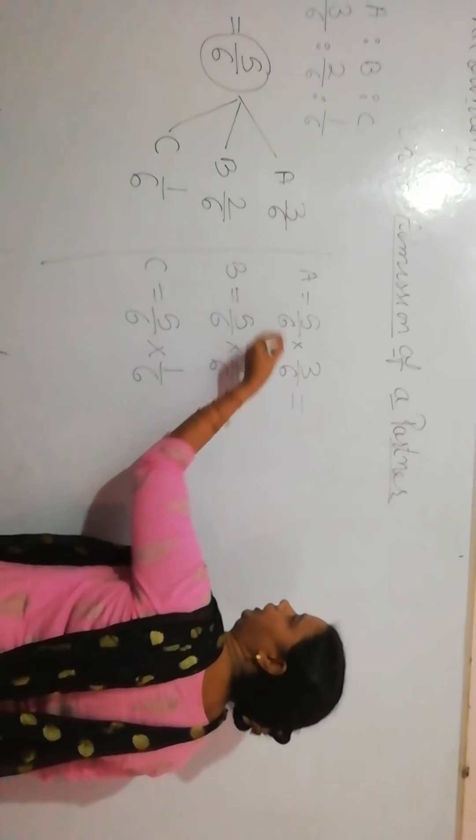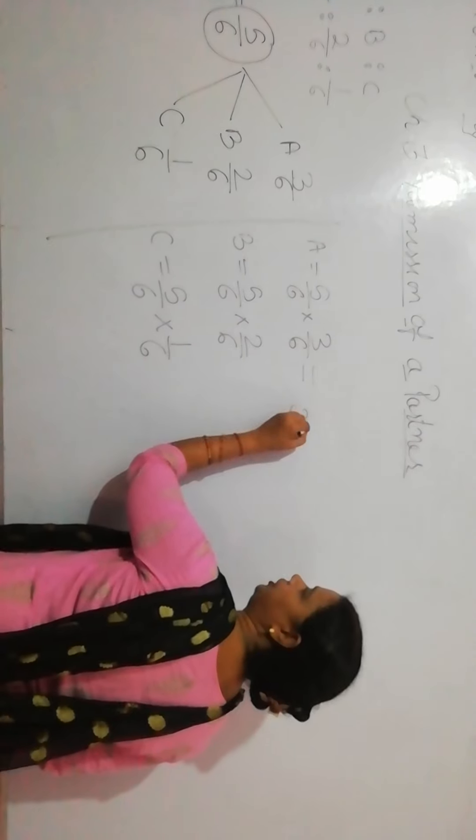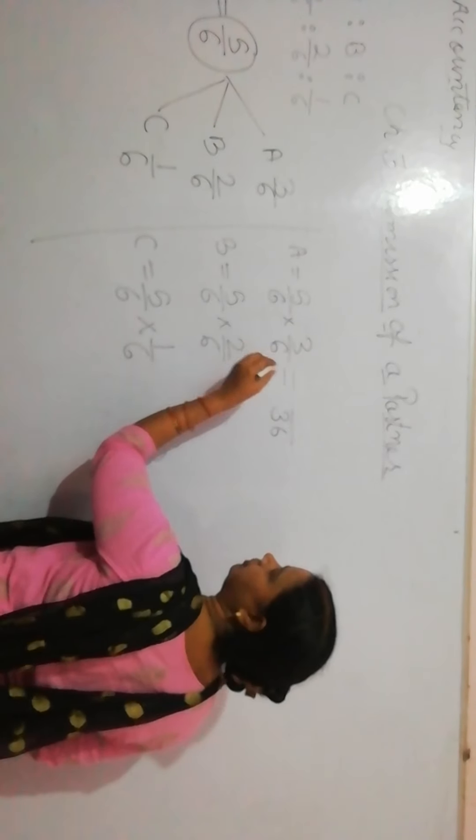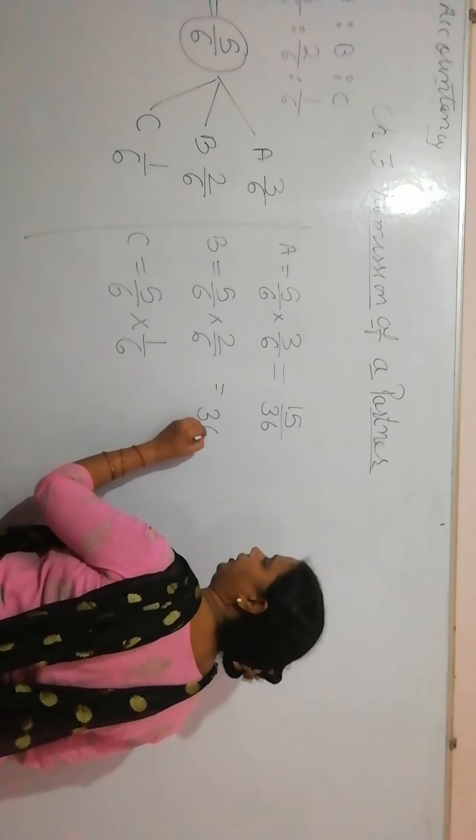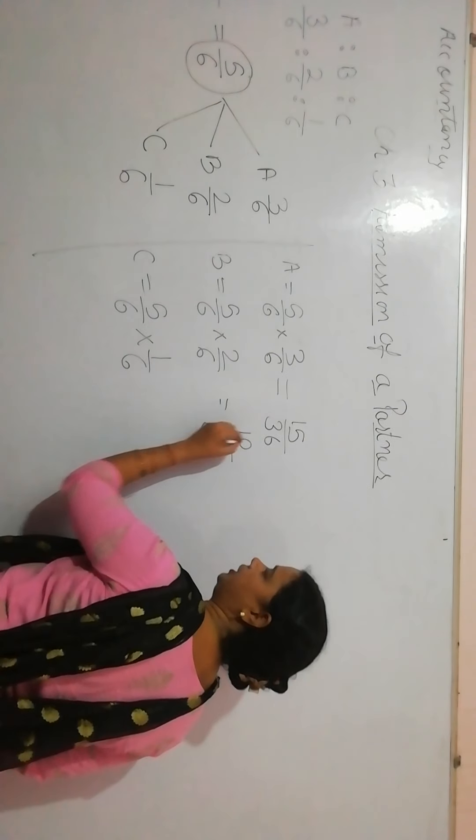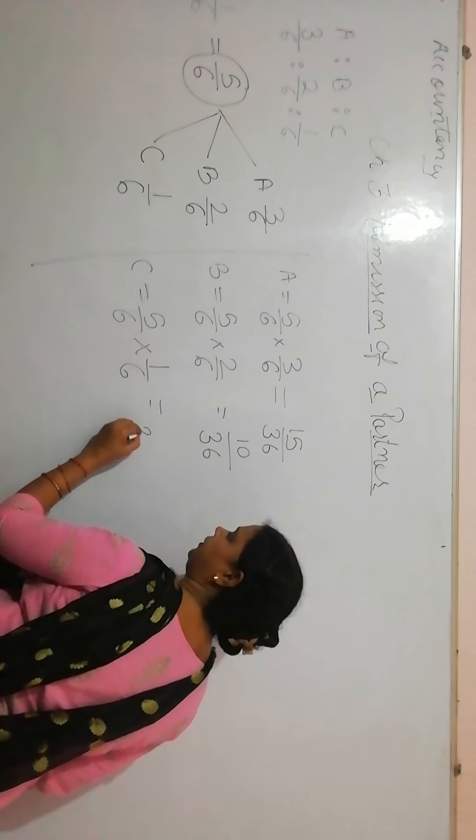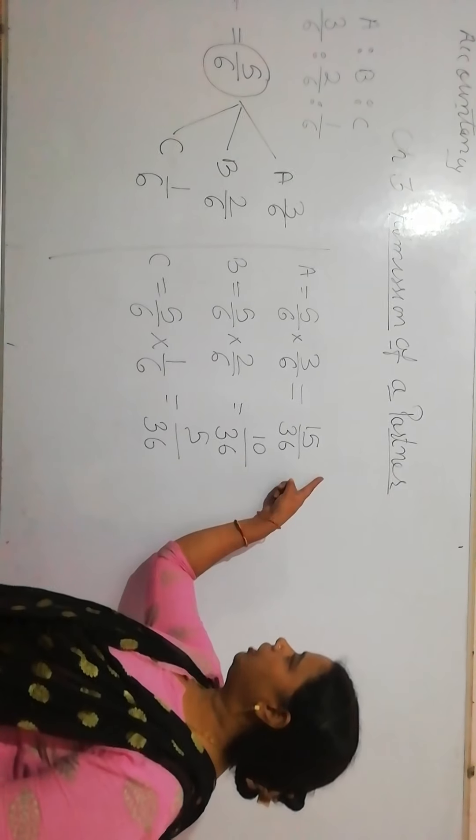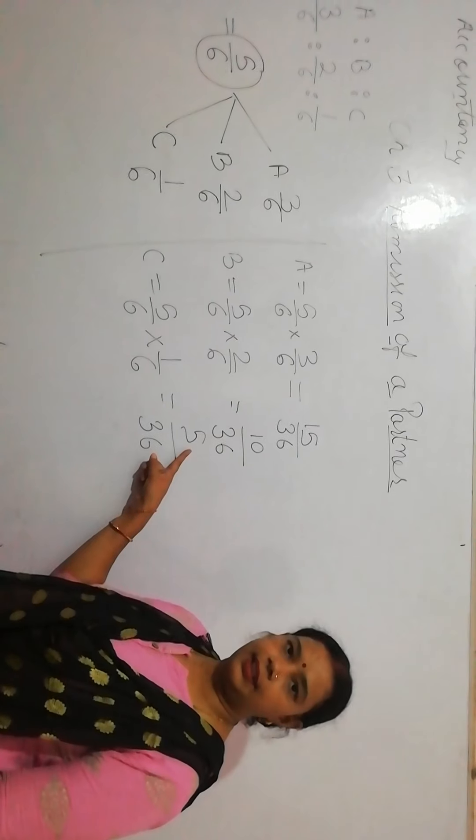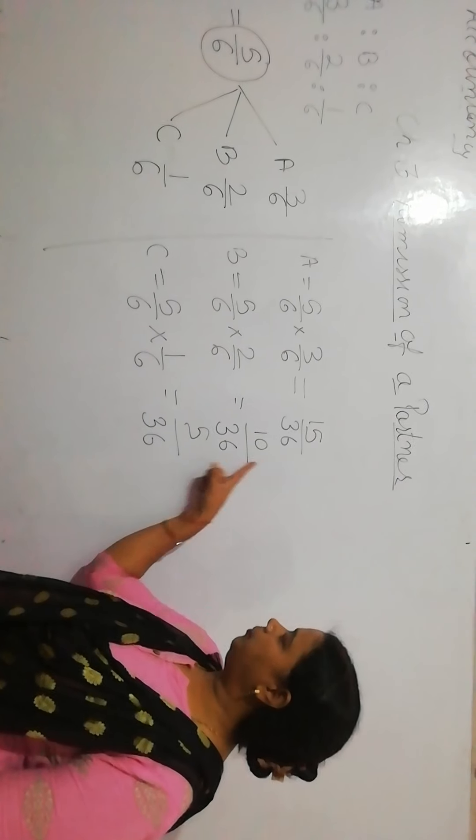So A is how much? How much is this? This is 36, 5, 3, 15. This is 36, 5, 2, 10. And this is 36, 5, 5, 5. This is clear. 15, 10, 5. 15 by 10 by 5.